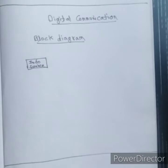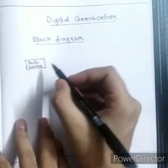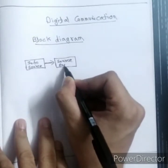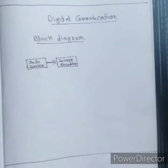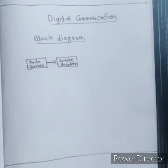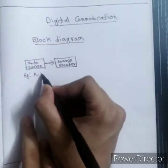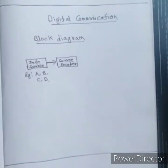The messages generated by the information source are passed through a source encoder. Let's take an example to understand what a source encoder does. Assume the information source generates four symbols: A, B, C, D. Since the information source is generating four discrete symbols, it is a digital information source, and these four symbols are the messages.